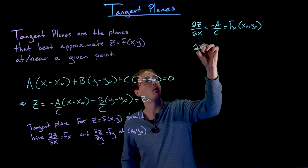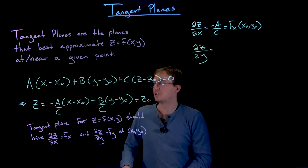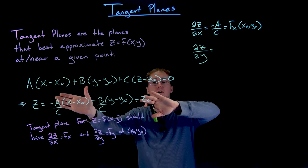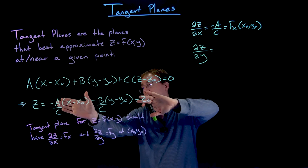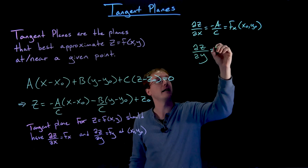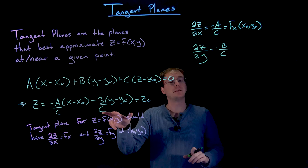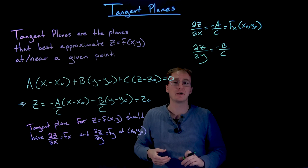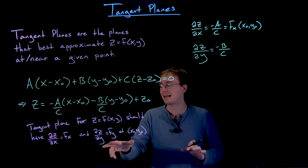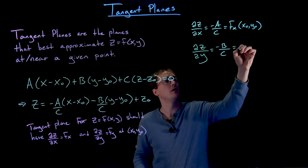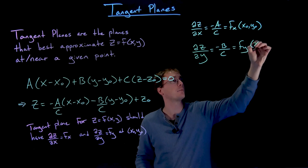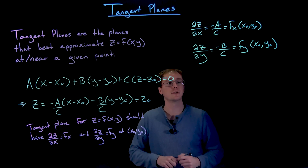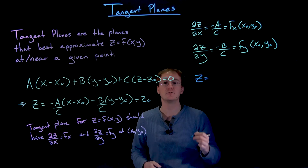Similarly, if we take the partial derivative of z with respect to y in our plane's equation, the x and z pieces are constants and disappear. Differentiating the y pieces gives us negative b over c. So negative b over c is the coefficient representing the partial derivative of the plane's equation with respect to y. For this to be the tangent plane, that must equal the partial derivative of our function with respect to y at the point of interest x-naught comma y-naught.